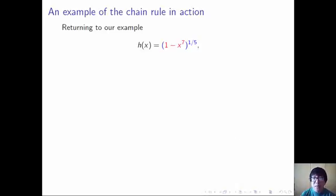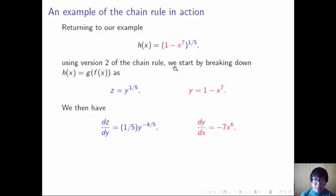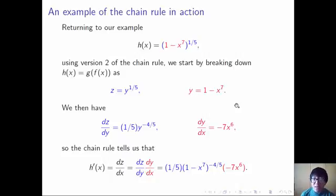So let's turn to an example. Returning to h of x equals quantity 1 minus x to the seventh, all to the 1/5. The inside function is 1 minus x to the seventh and the outside function is blah to the 1/5. Using version two of the chain rule, we break this down as z equals y to the 1/5 and y equals 1 minus x to the seventh. Then dz/dy is 1/5 times y to the minus 4/5 — we bring the exponent down and subtract 1 from the exponent. And dy/dx is minus 7x to the sixth — that minus sign pulls through, and the 1 goes away. So the chain rule tells us that h prime of x is dz/dy times dy/dx, which is 1/5 times quantity 1 minus x to the seventh, all to the minus 4/5 power, times minus 7x to the sixth.